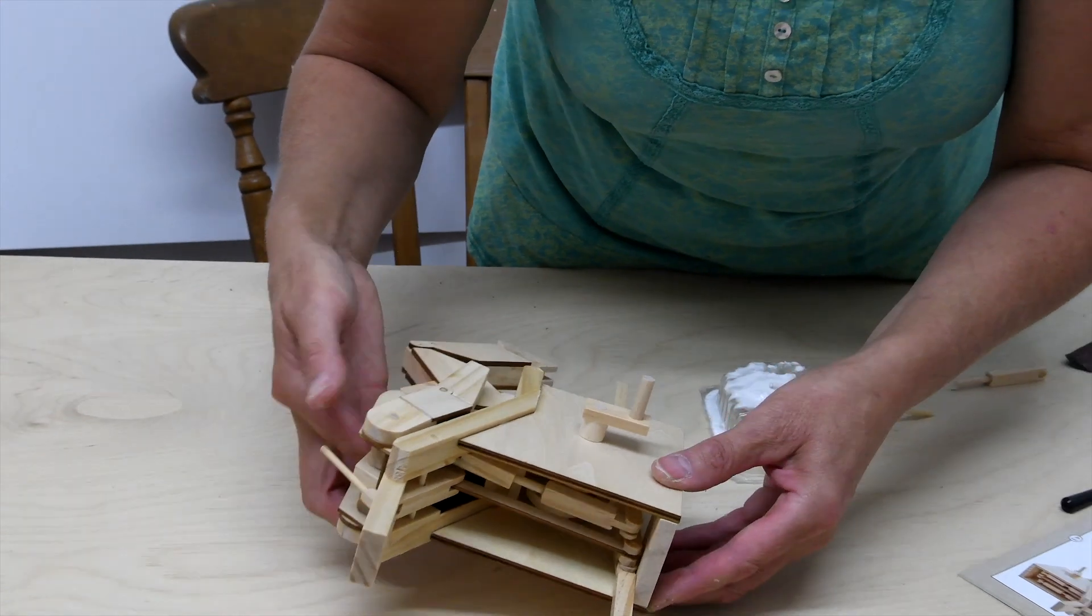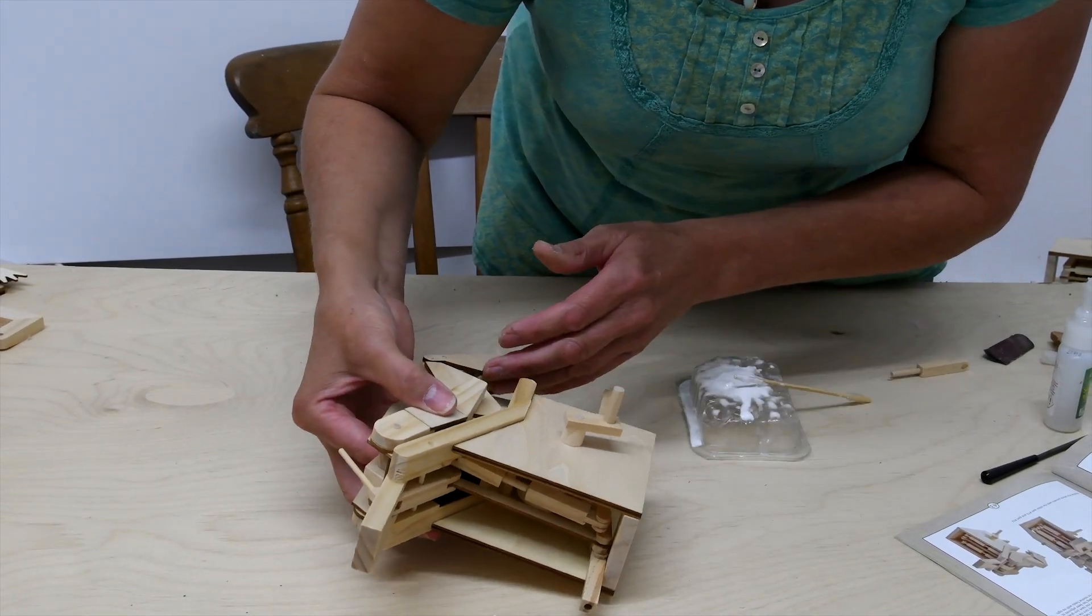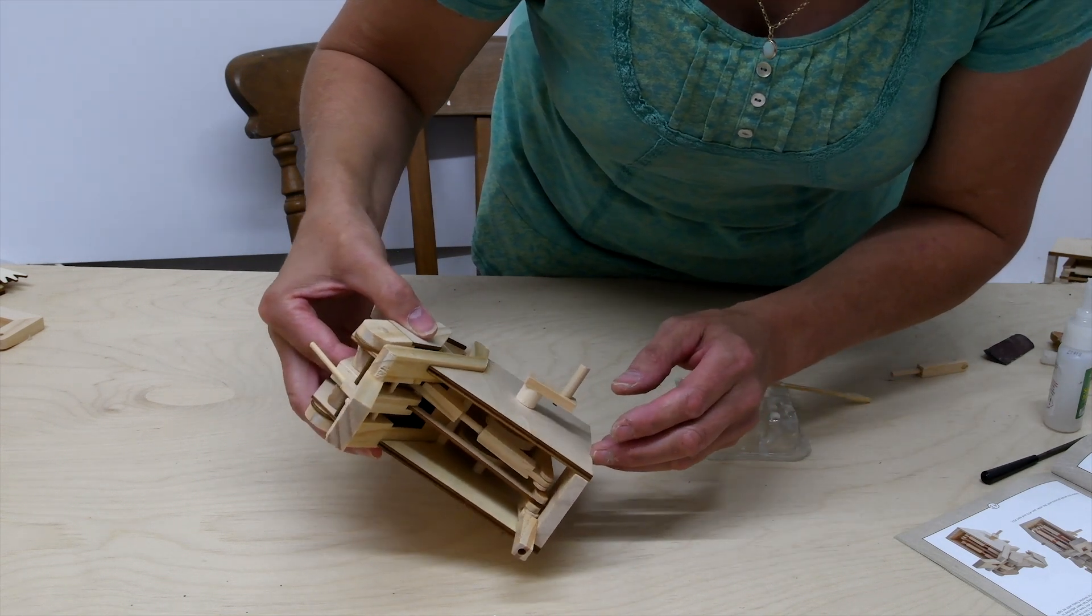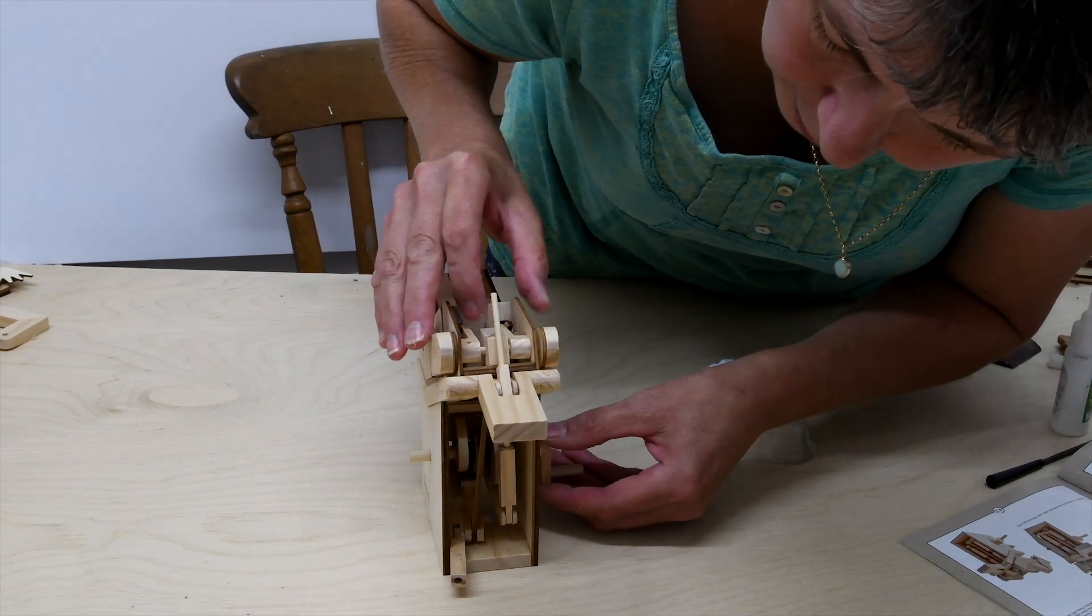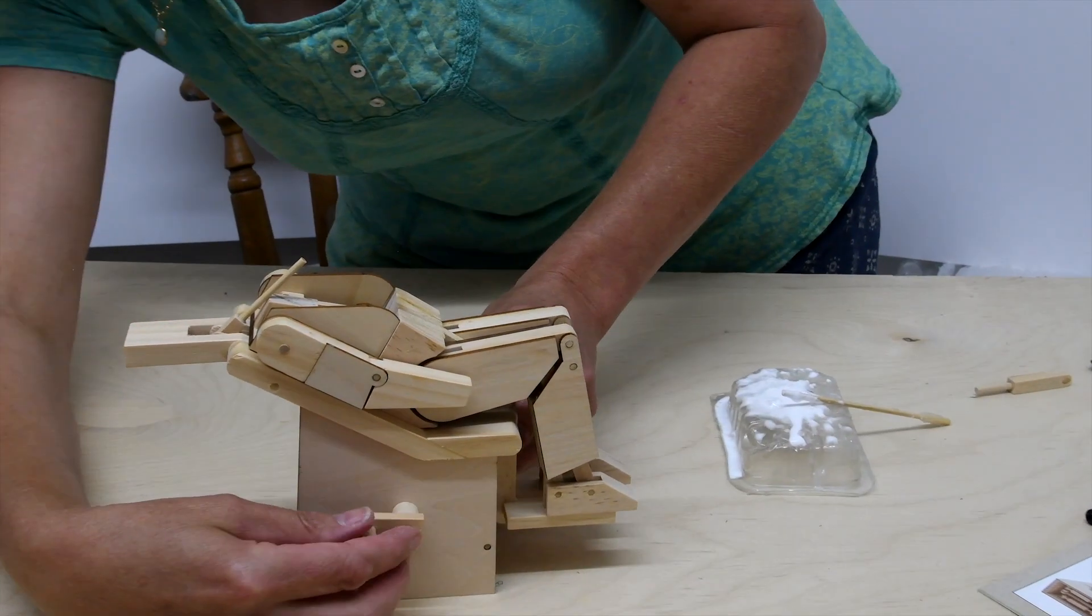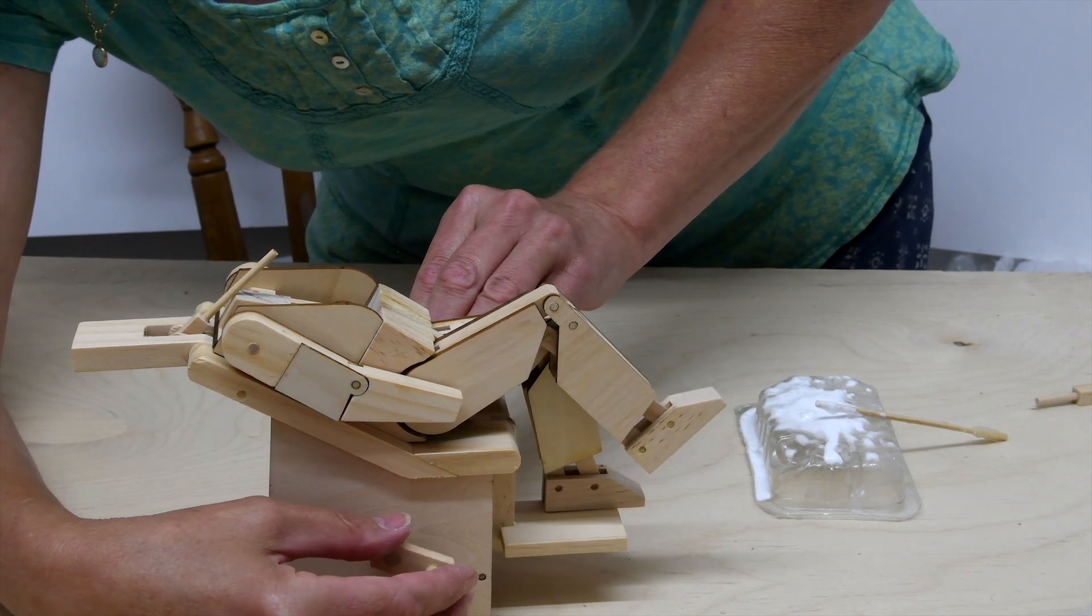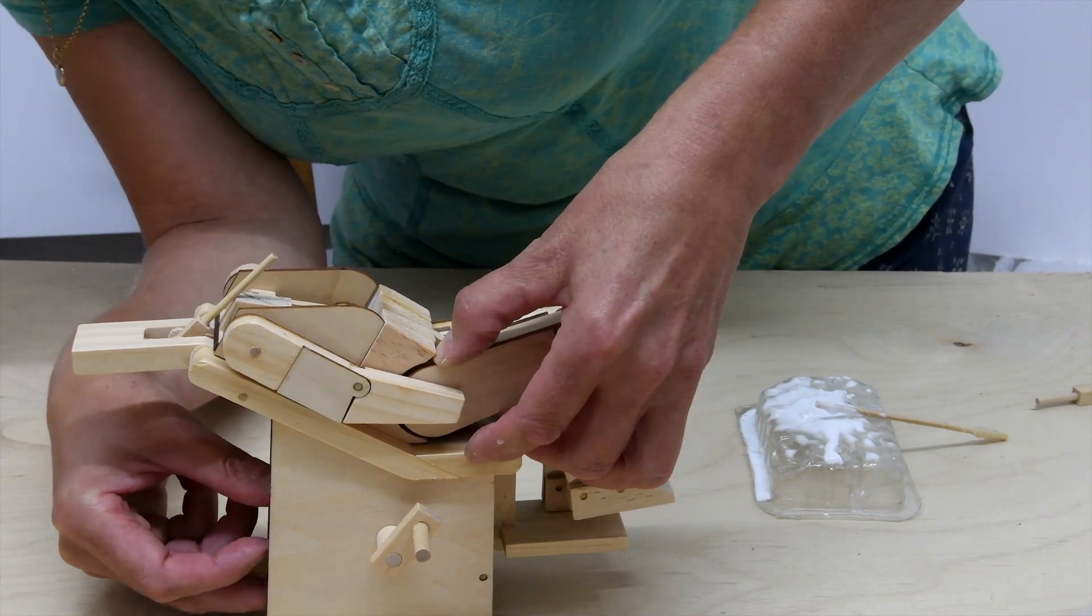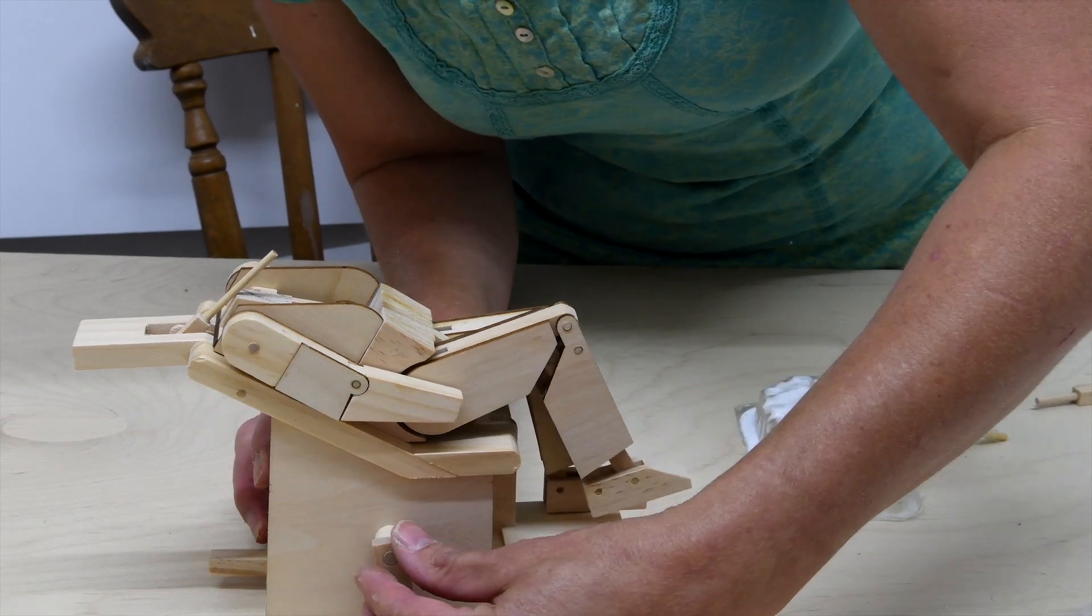When it's in its lowest down position and you're holding that peg, the leg should be up. Once it's taken, you should be able to very slowly stand that back up. And just keep adjusting that while the glue is still drying so you get the highest kick you can without it jamming by being too tight.